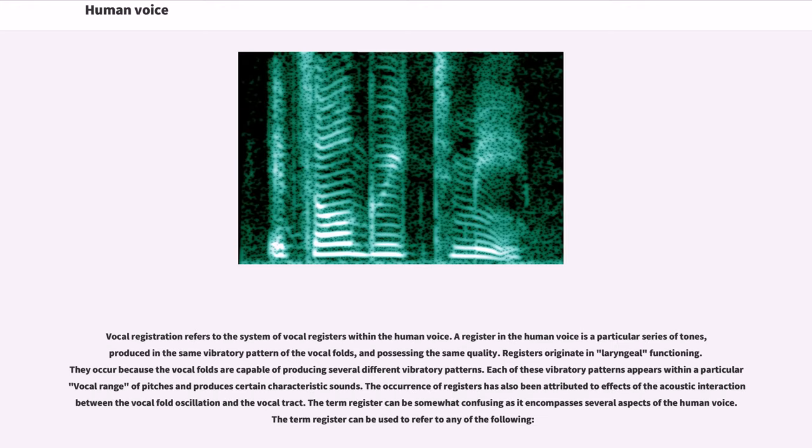Vocal registration refers to the system of vocal registers within the human voice. A register in the human voice is a particular series of tones, produced in the same vibratory pattern of the vocal folds, and possessing the same quality. Registers originate in laryngeal functioning. They occur because the vocal folds are capable of producing several different vibratory patterns. Each of these vibratory patterns appears within a particular vocal range of pitches and produces certain characteristic sounds. The occurrence of registers has also been attributed to effects of the acoustic interaction between the vocal fold oscillation and the vocal tract. The term register can be somewhat confusing as it encompasses several aspects of the human voice.